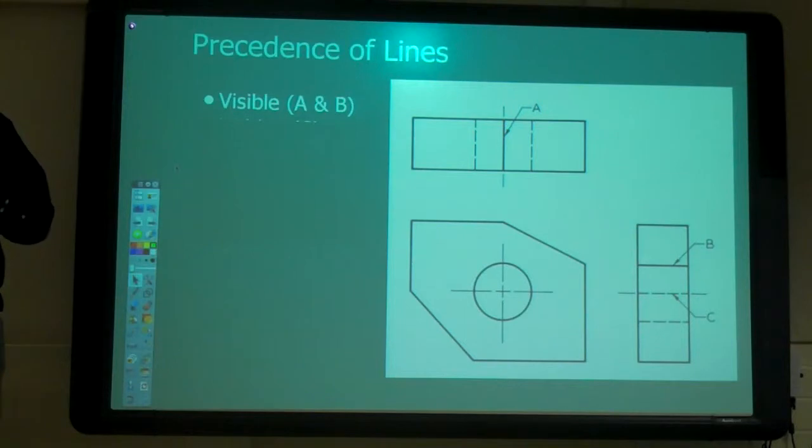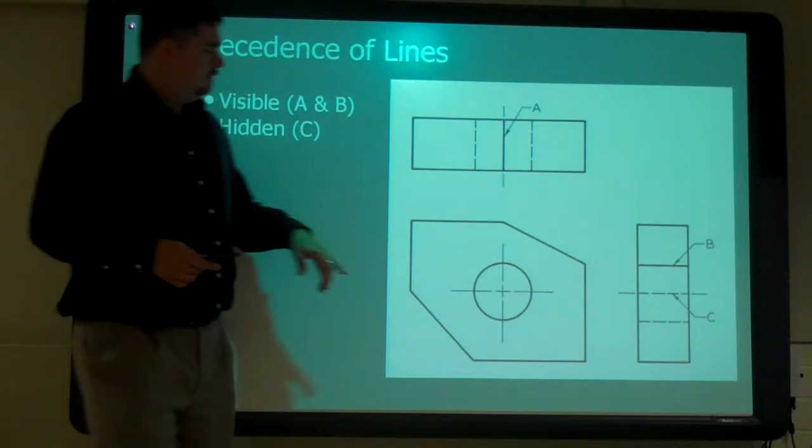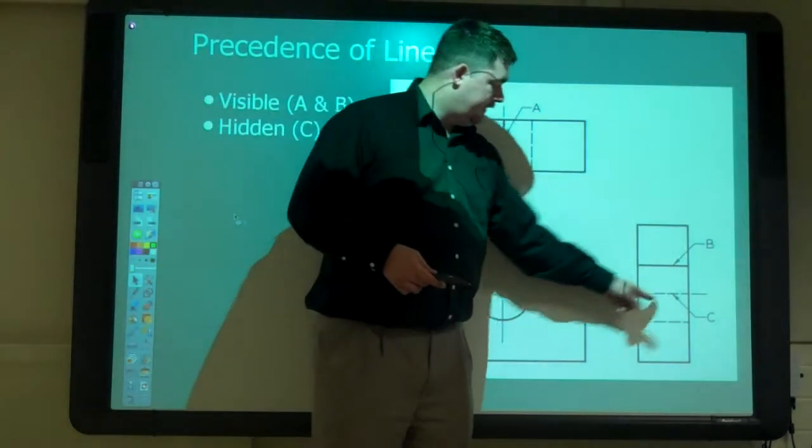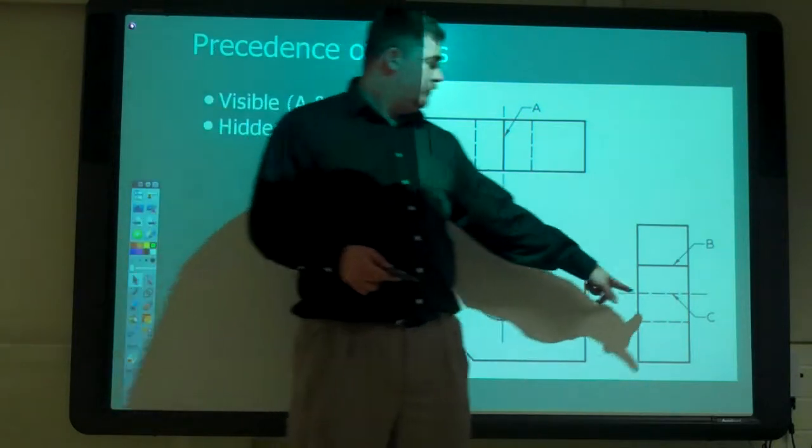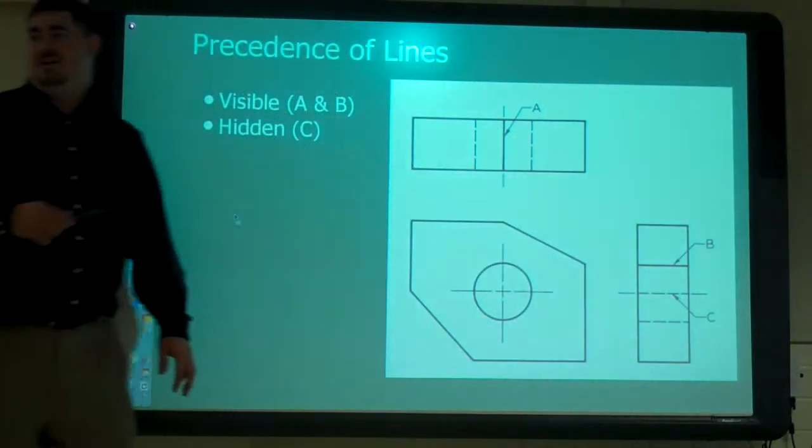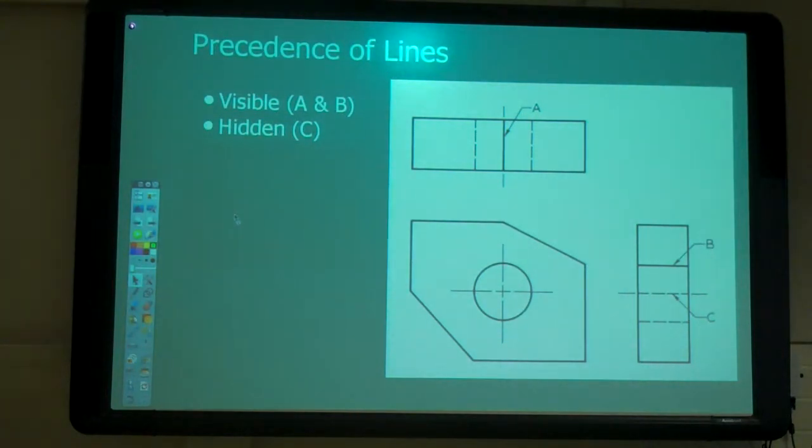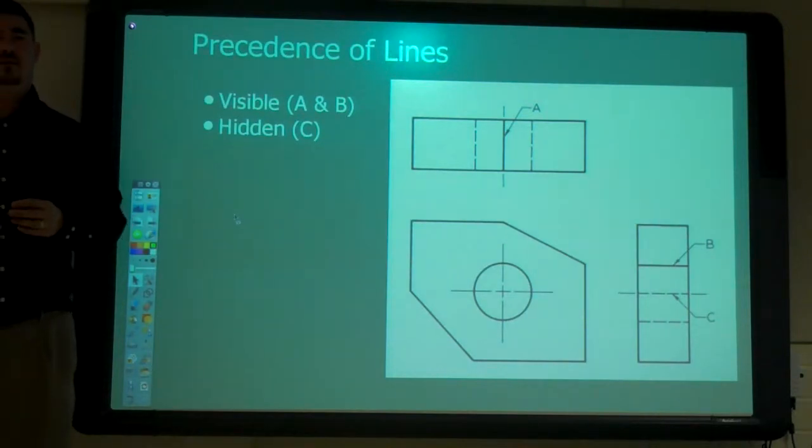And then after that, which one is more important, hidden or center? Hidden, because that's an actual part of the part. Right here, there's a hidden corner here lined up with the center line. We show the hidden line just because that's more important than the center line. The center line is last. So we do all the visible stuff, we do the hidden stuff, then we do the center lines.